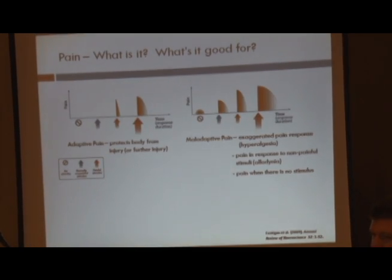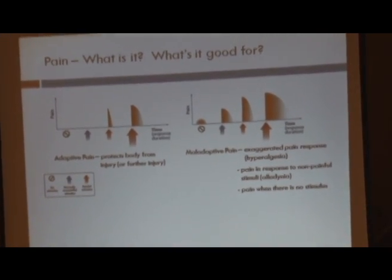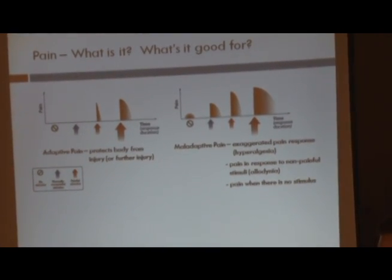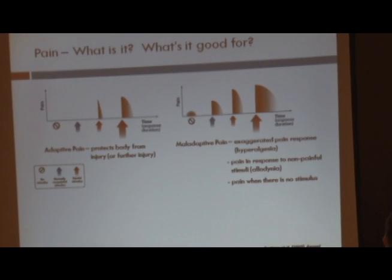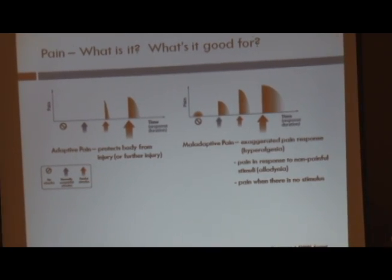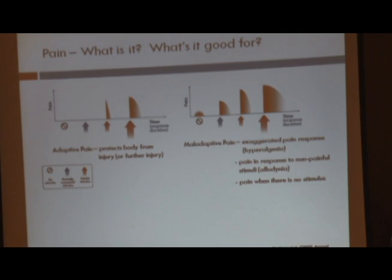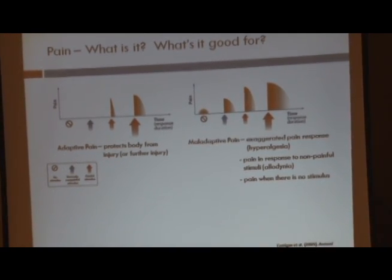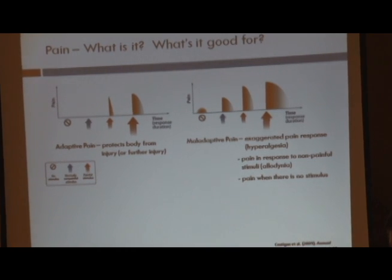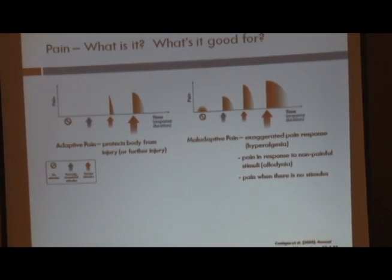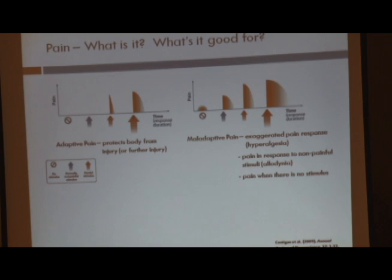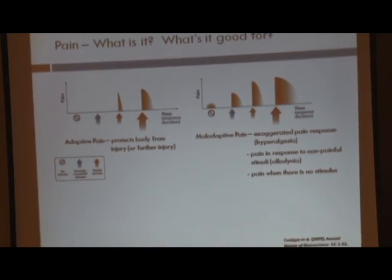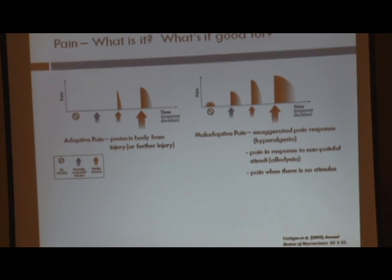We typically think of pain as being bad, but pain has a very positive protective element and what we call this adaptive element. It protects us from getting further damaged, further injured, or even killed. Whenever you're stepping on a nail and pulling your foot away, that's your pain sensory cells initiating a defensive behavioral response. And without those pain-sensing cells, you would be liable for even more damage.